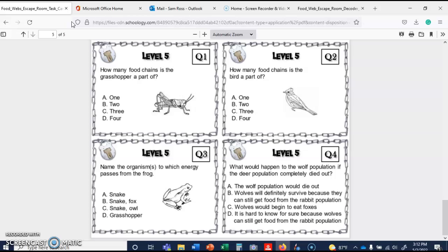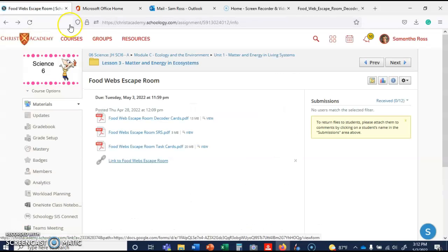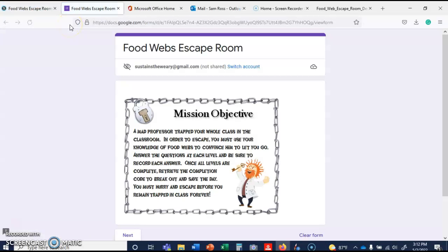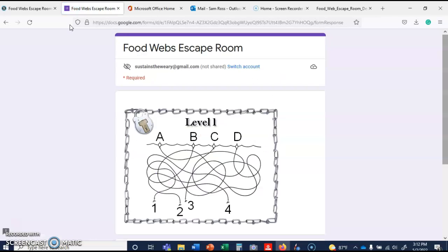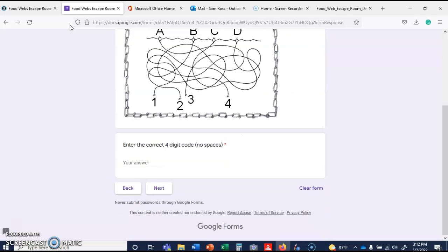And to make sure that you get all of these correct, you'll go to the escape room. And you'll have to use your decoders. But after you have your ABCD for each of your questions, you can use your decoder and put in your four-digit code. Let me know if you have any questions.